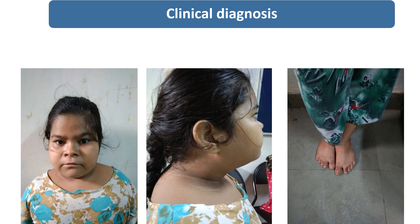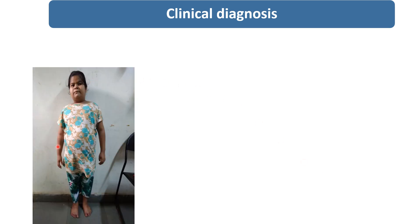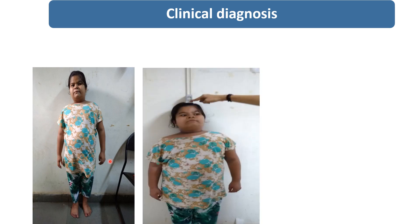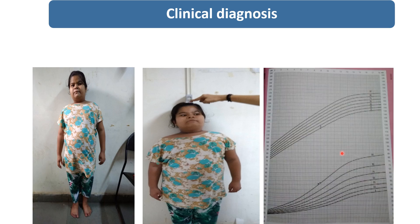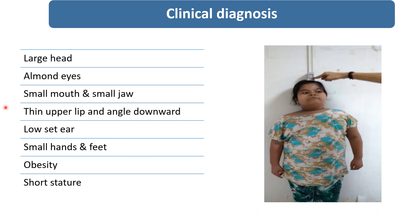So on the basis of these clinical findings, what will be the clinical diagnosis? There is central obesity — the child has a distended abdomen. Height was also measured and the child is having short stature. On the growth chart, the child's weight is above the 97th percentile and height is below the 3rd percentile.